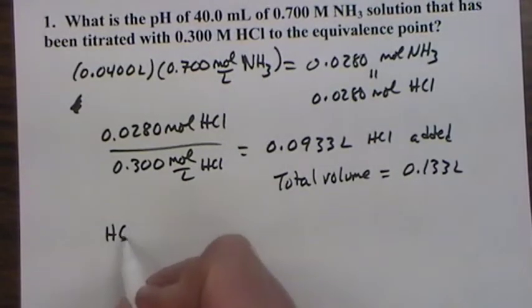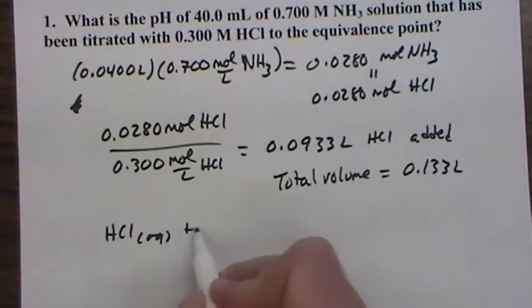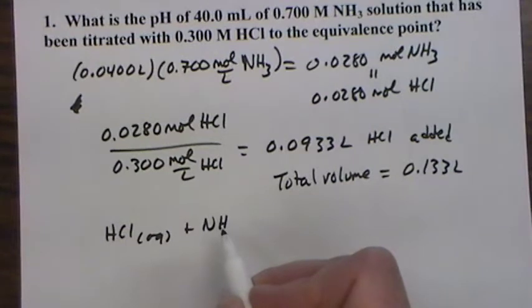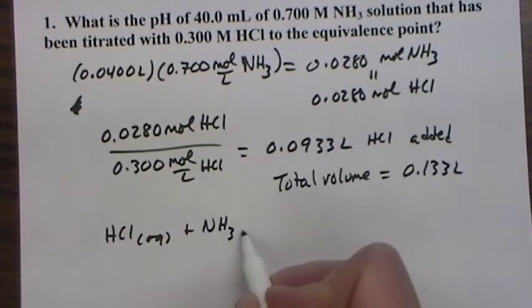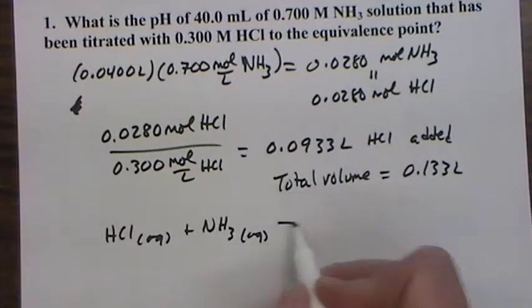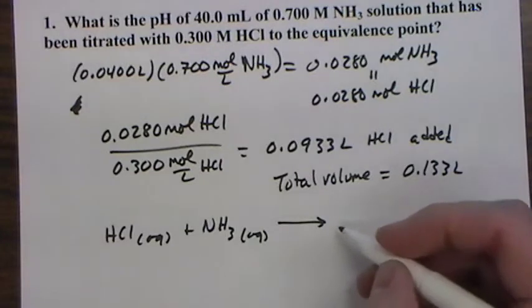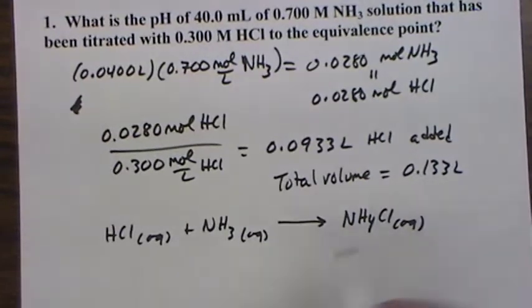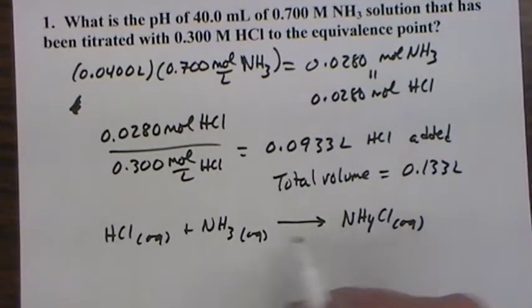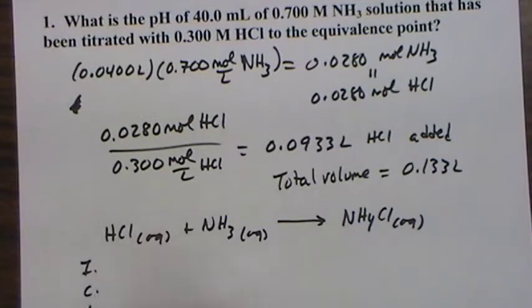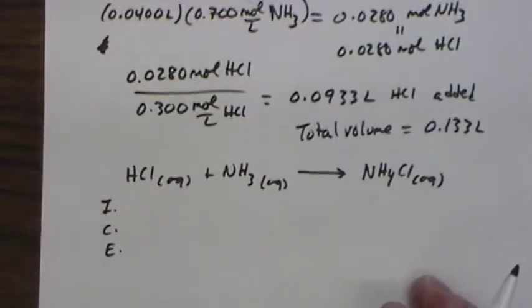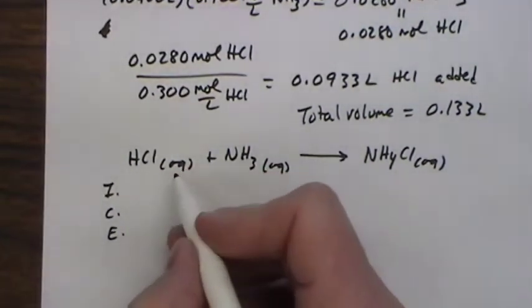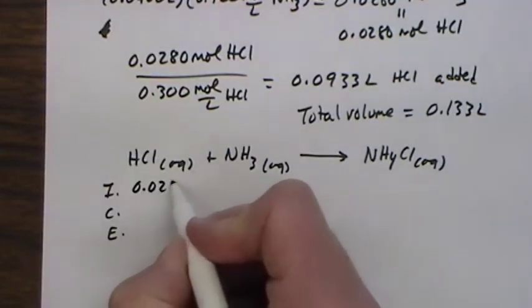Now the HCl and the ammonia, we know that we have 0.028 moles of each that will be reacting together 100% because a strong acid is involved. Anything strong acid or strong base that's involved, it goes until it can't go anymore. There's no backward, no reverse equation. It just reacts until it's all gone, or the other thing is all gone, or in this case both of them are used up at the exact same time.